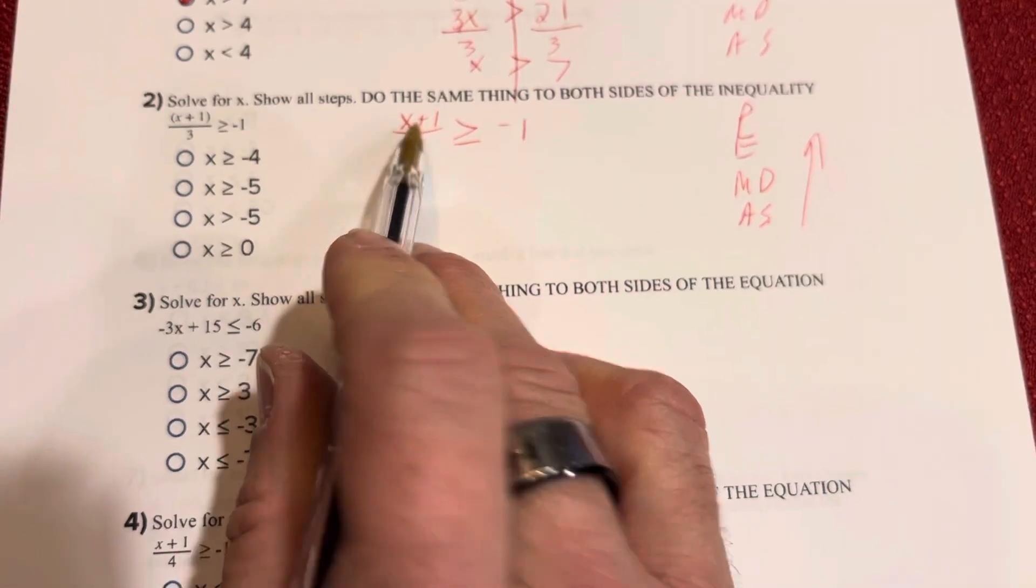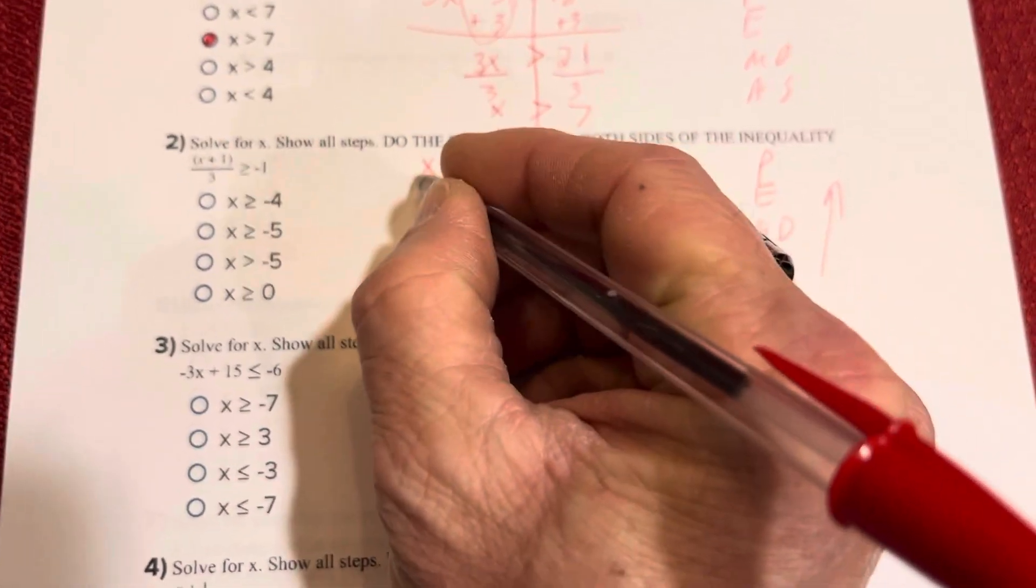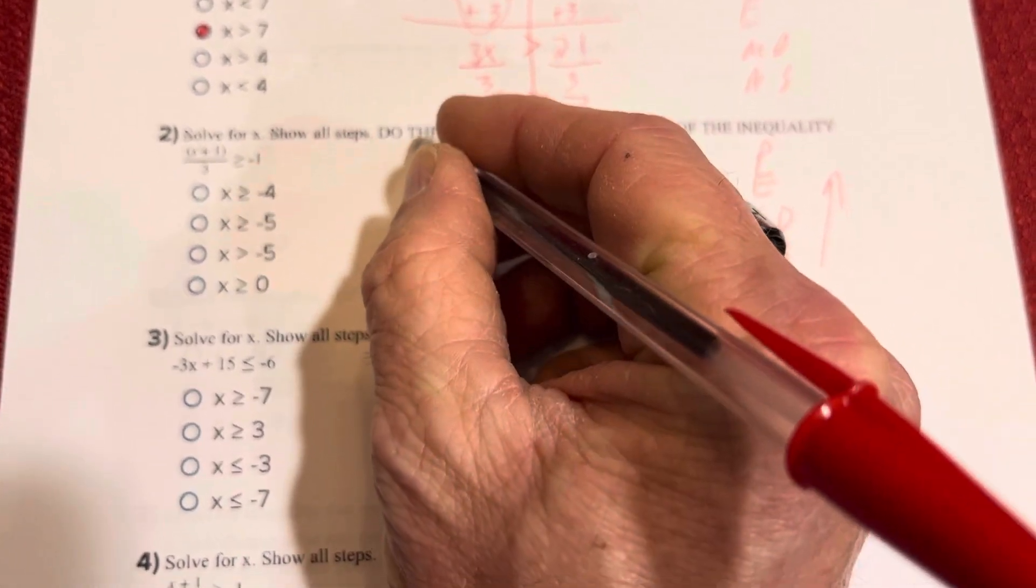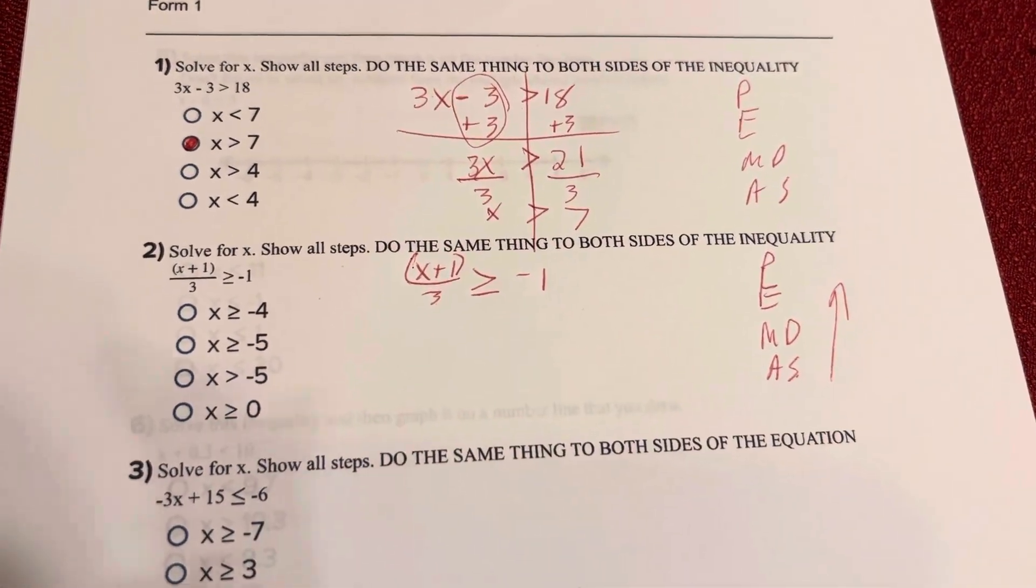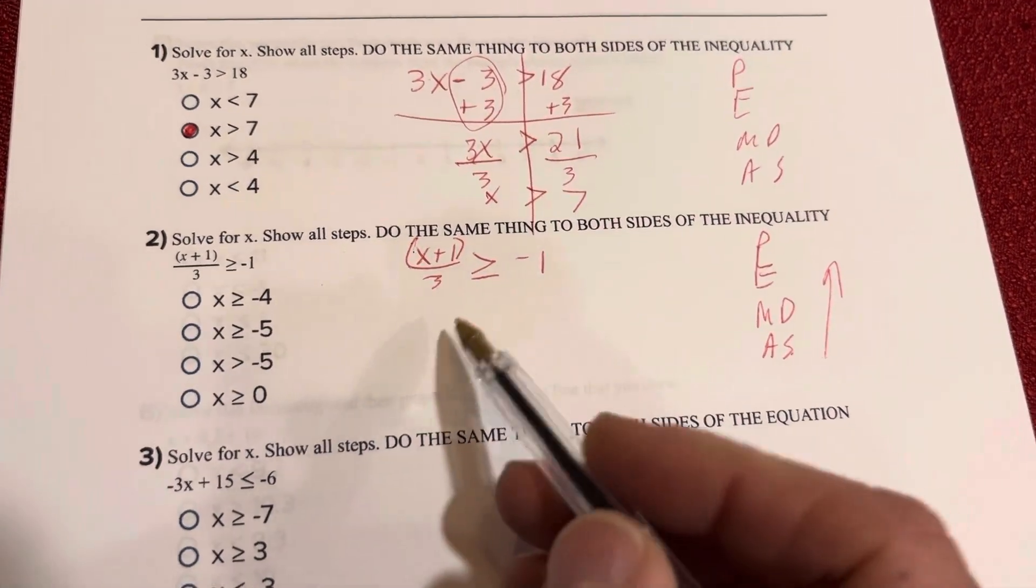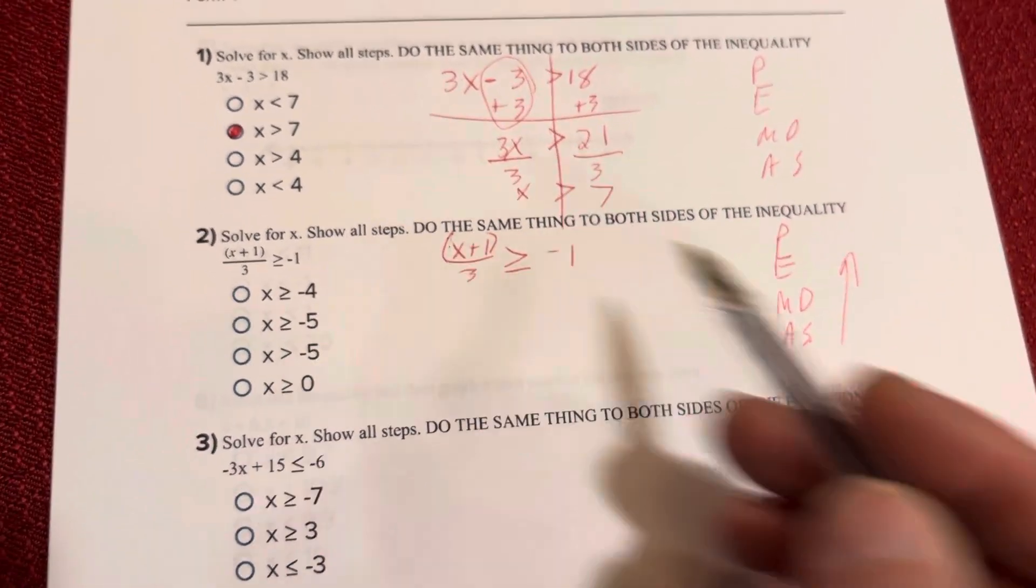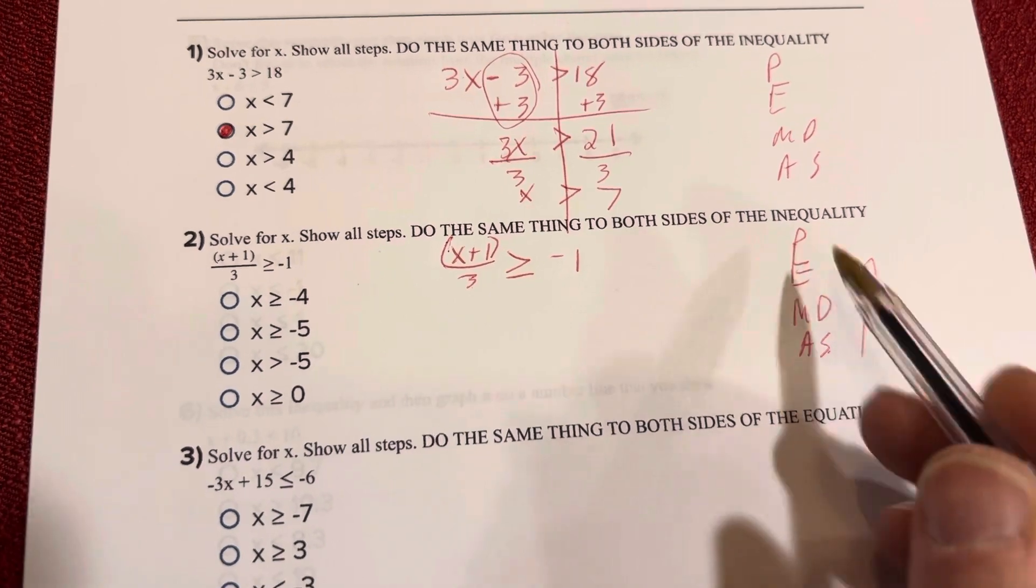Now you would think I would undo the addition first, but this entire quantity x plus 1 is being divided by 3, which means I can assume that parentheses would be around it. Sorry if I lose focus on it because I'm holding the phone with my left hand. So I'm going to undo the division before I undo the parentheses.